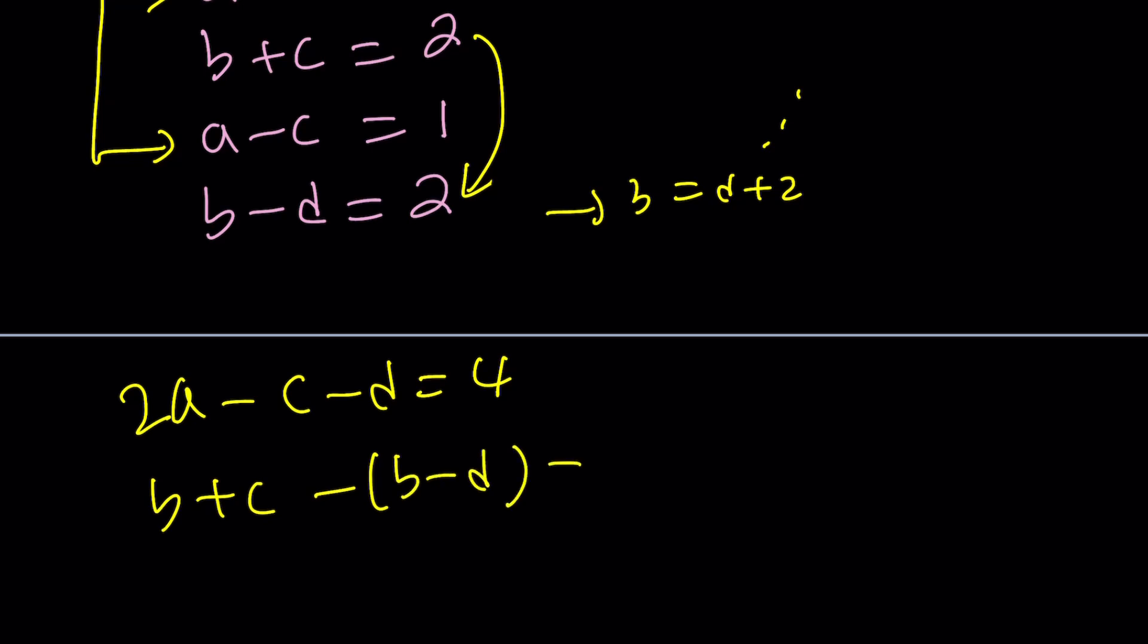b is going to cancel out. c plus d is going to be zero. And here I get 2a minus the quantity c plus d, which means c plus d is zero, so I can plug it in, which means a is equal to 2.